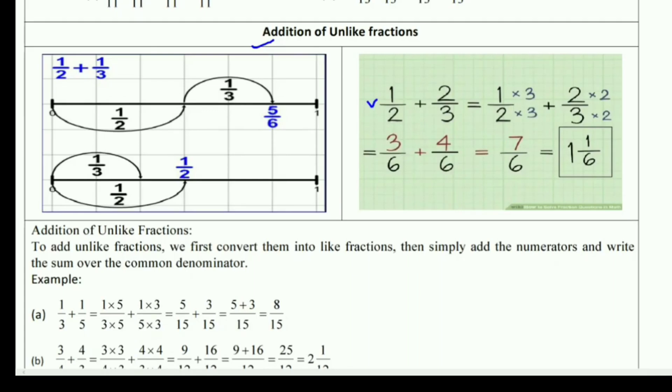For example, 1/2 plus 2/3 - both have different denominators. To make them the same, multiply the first fraction by the second fraction's denominator, which is 3. Multiply the second fraction by the first fraction's denominator, which is 2. So we get: 1 times 3 over 2 times 3 plus 2 times 2 over 3 times 2. The answer is 3/6 plus 4/6. Both denominators are now the same. Now just like before, keep the common denominator as 6 and add the numerators: 3 plus 4 equals 7/6.